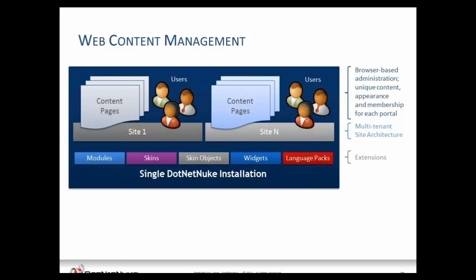The most common type of extension is called a module — the thing you see on a daily basis on the different pages you add to the site. Modules could be a blog, a forum, HTML-based content, surveys, and so on. The center extensions are all about the design of your site: skins — which is what we call a design in .NET Nuke — skin objects, and widgets. These are used to apply branding and make visual adjustments to the layout. Finally, there are language packs. .NET Nuke is a fully localized solution that allows you to localize not just static content but all of your dynamic content as well, enabling multilingual websites.